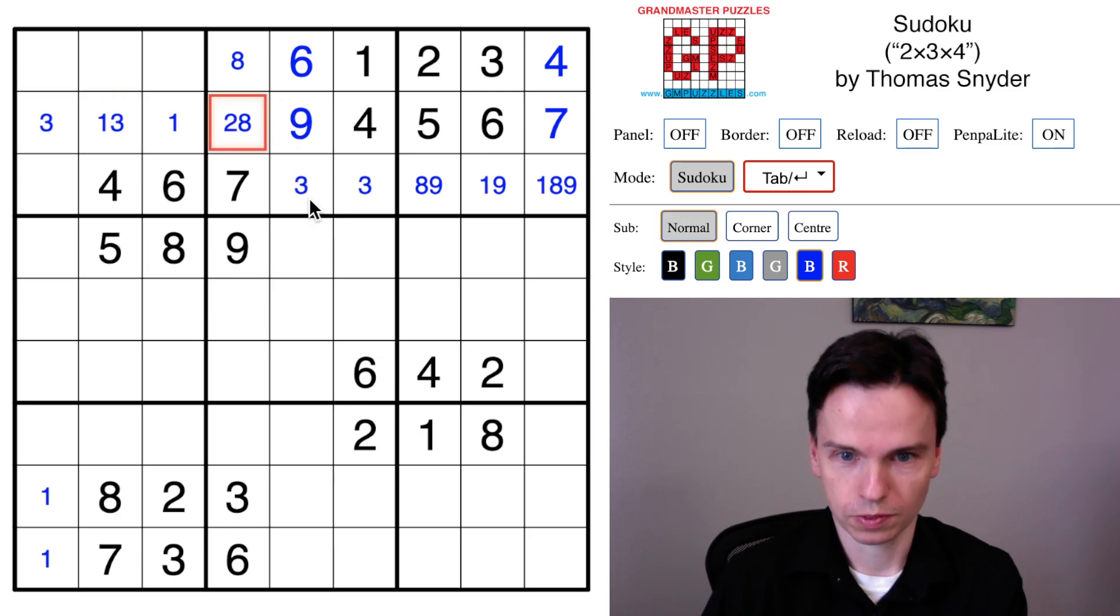We're going to have that a two is in one of these cells. Next, our easy digits, two threes, give another three. Of course, the three in one of these cells.